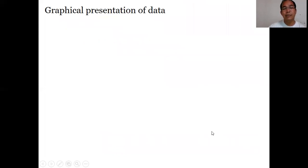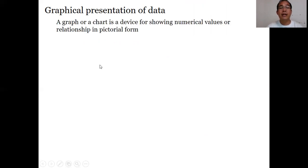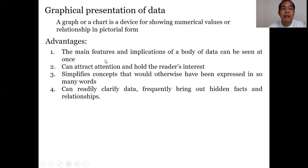After constructing the frequency distribution, it would be better to present the data in graphical form. A graph is a device for showing numerical values or relationships in pictorial form. The advantages are: the main features and implications of data can be seen at once. It can attract attention and hold the reader's interest. The graph simplifies concepts that would otherwise be expressed in many words. And it can readily clarify data, frequently bringing out hidden facts and relationships. Qualities of a good graph: it is accurate, clear, and simple.